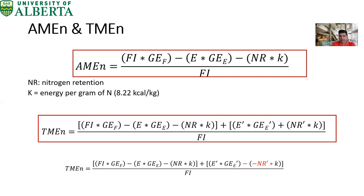I have explained AME, TME, AMEN, and TMEN in poultry nutrition. If you happen to hear just 'metabolizable energy' in an article, lecture, webinar, or conference without specification of which type, usually ME is referring to AMEN — apparent metabolizable energy corrected for nitrogen.